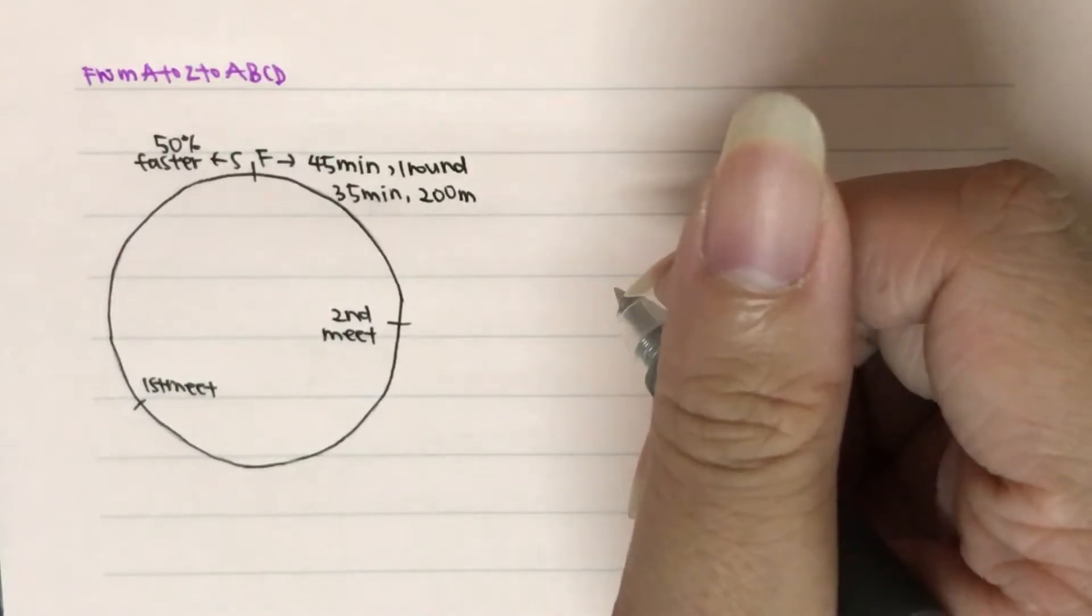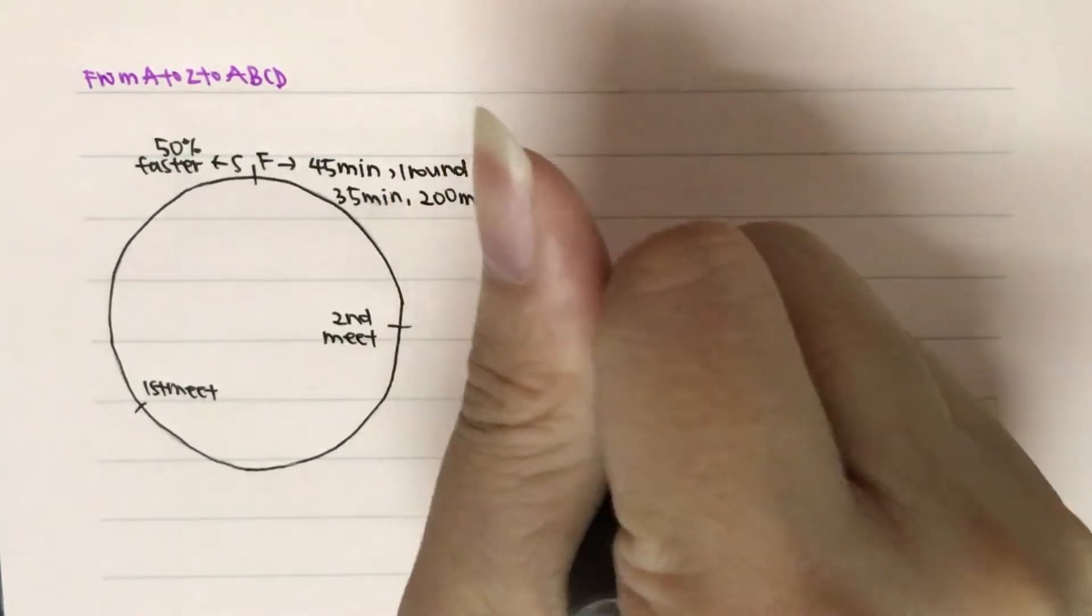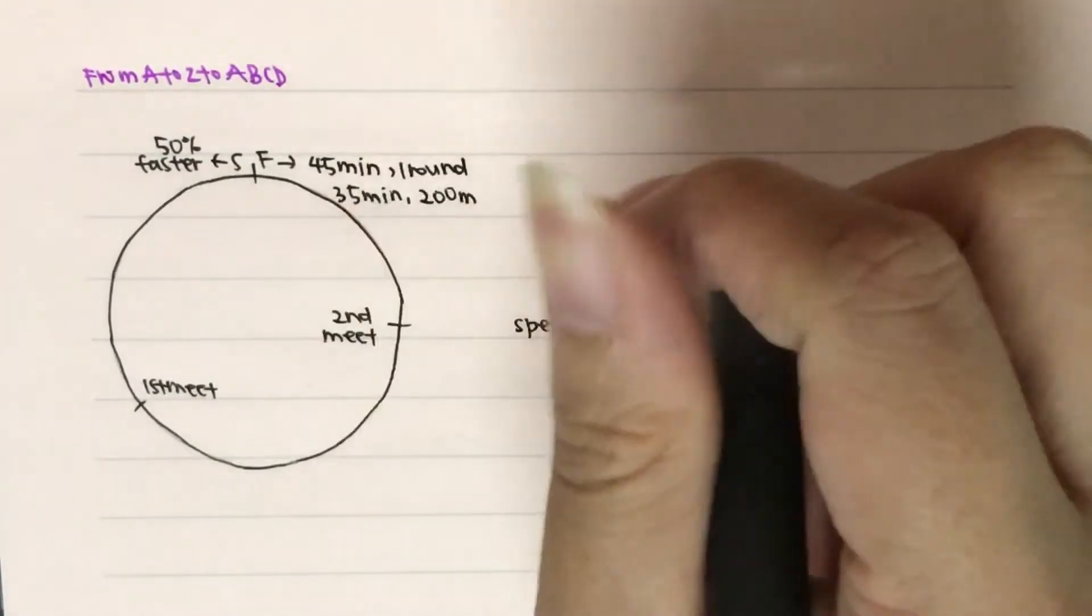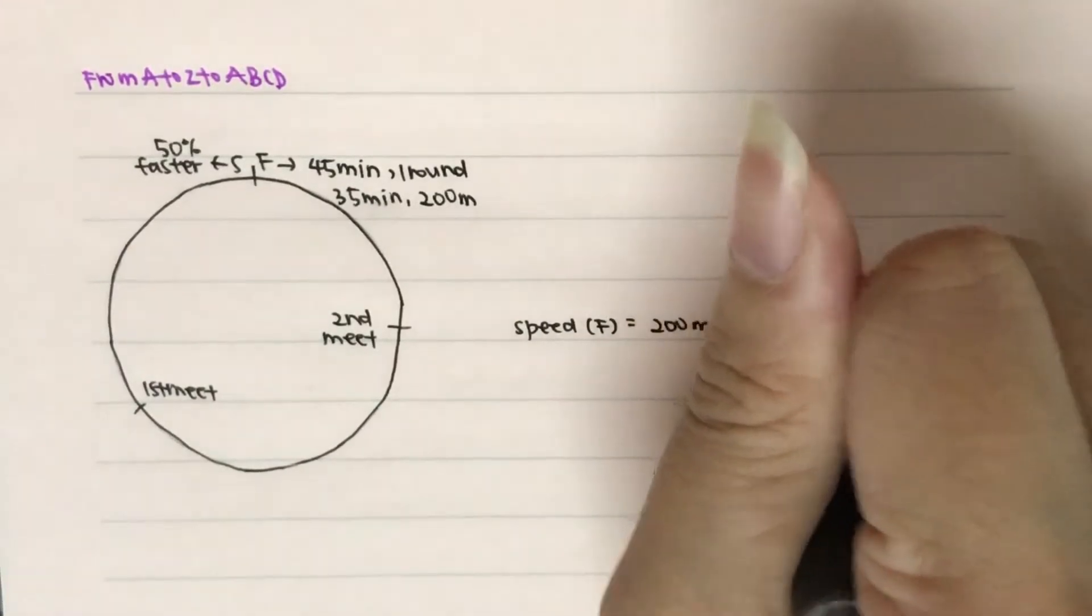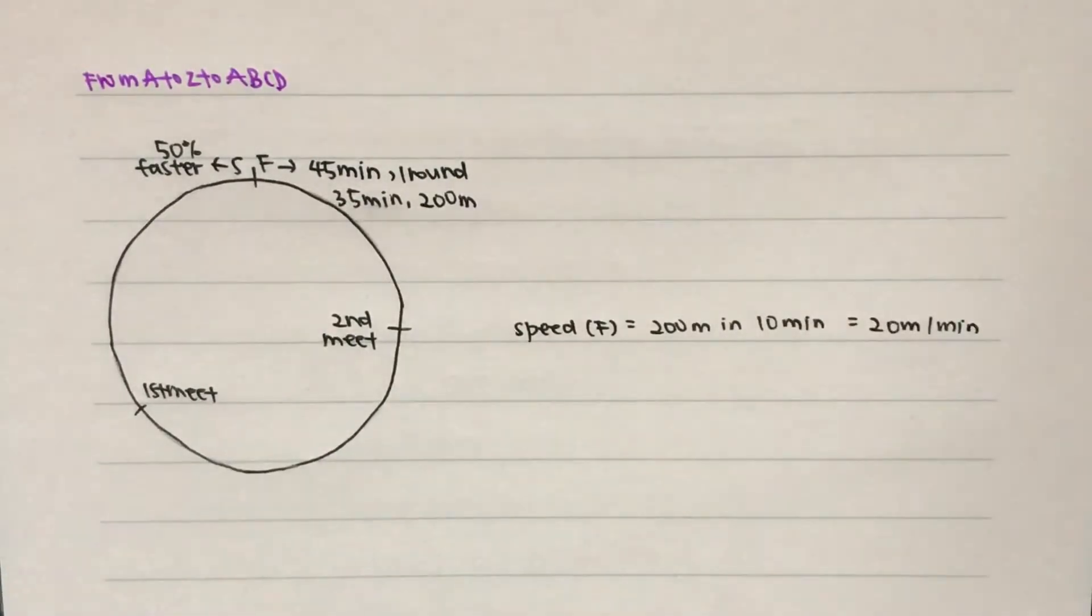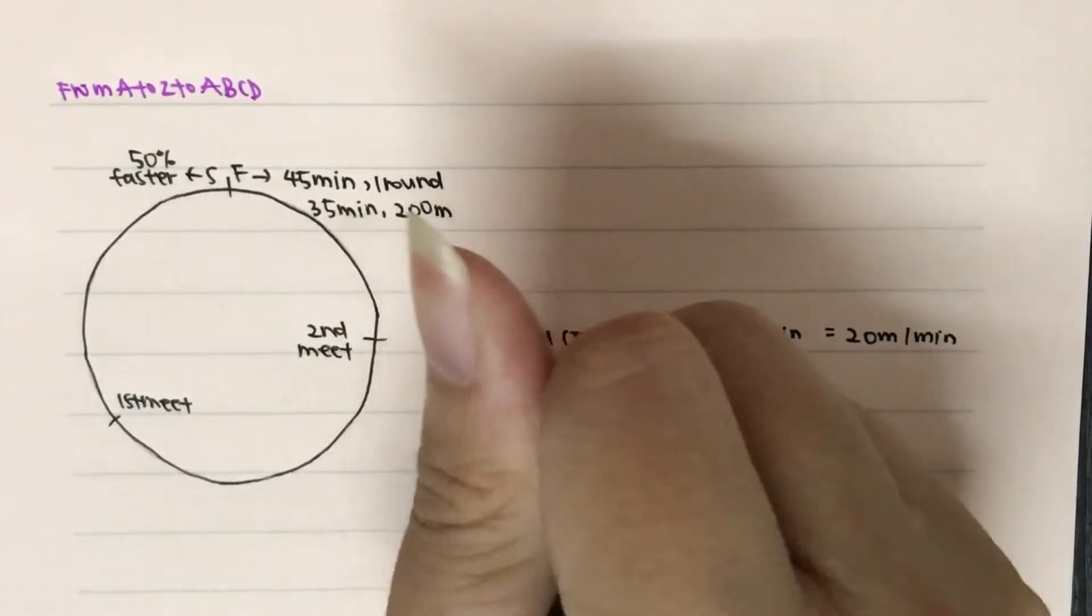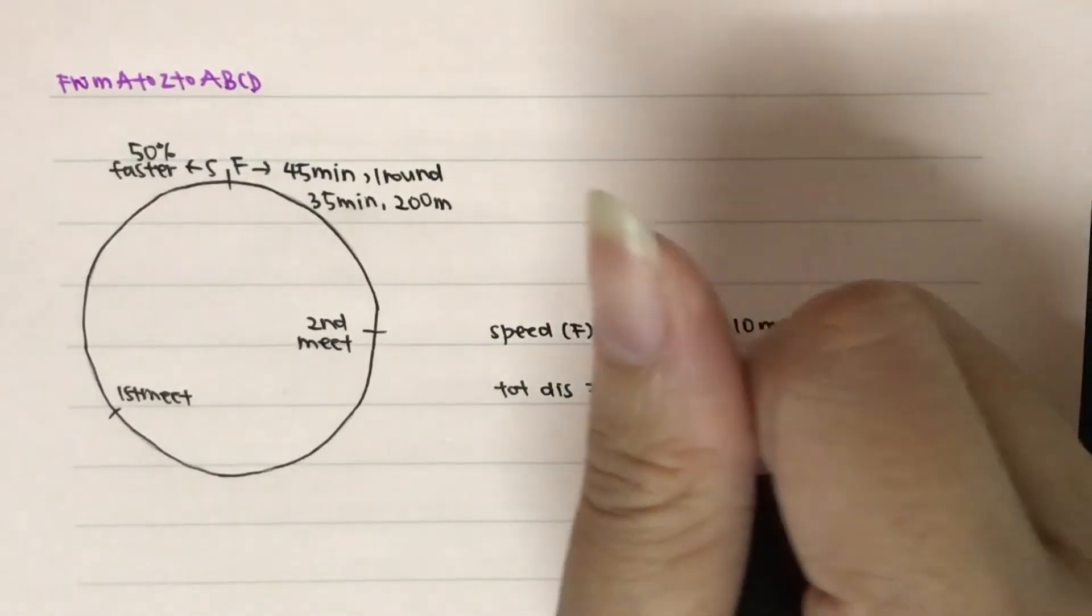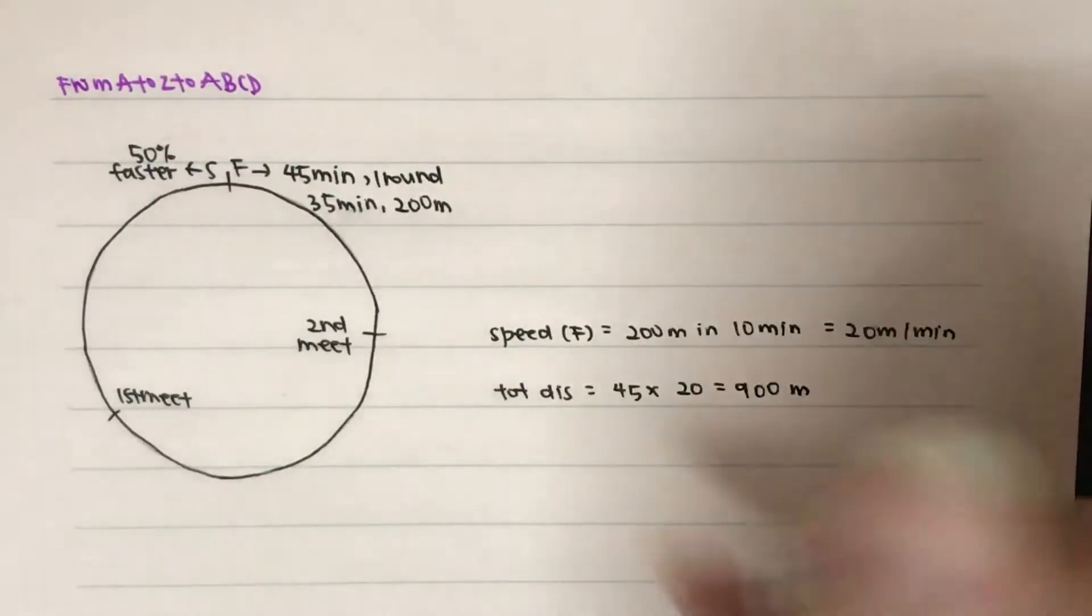So in part one, we know that the speed of Fujiko-san will be equal to 200 meters in 10 minutes. And this will actually give us 20 meters per minute. Then the total distance will actually be equal to 45 minutes times the speed, which is 20, and this will actually give us 900 meters. And that's part one.